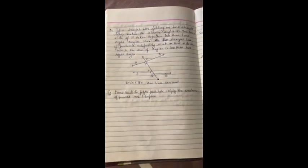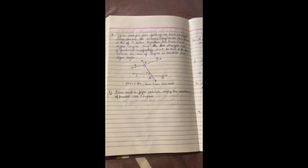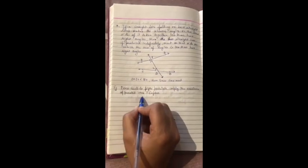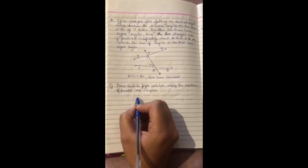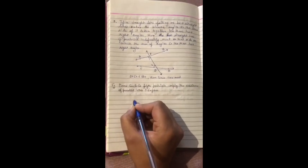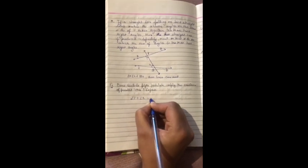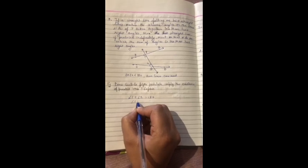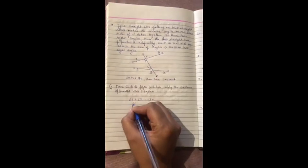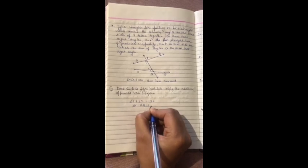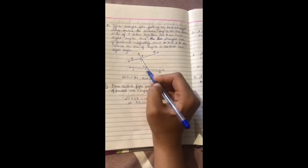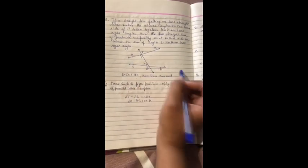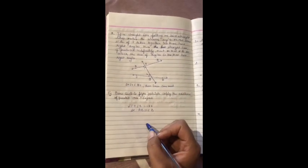Now, based on these axioms and postulates, let us do some questions. Does Euclid's fifth postulate imply the existence of parallel lines? No. Because parallel lines exist when angle 1 and angle 2 sum to 180 degrees. If AB is parallel to CD and the sum is less than 180, then they will meet. If equal to 180, they will not meet and will be parallel. That's why parallel lines do not exist in the fifth postulate.